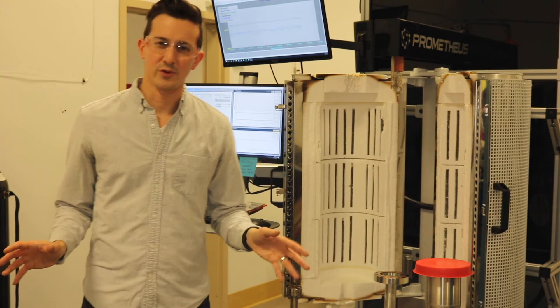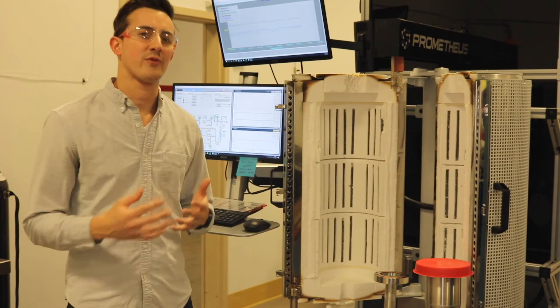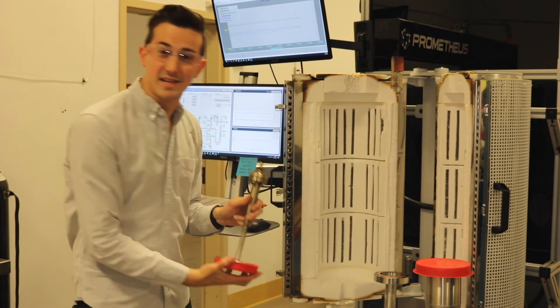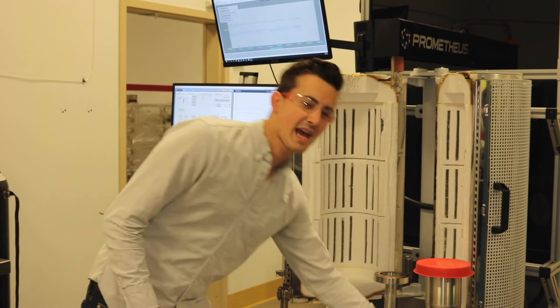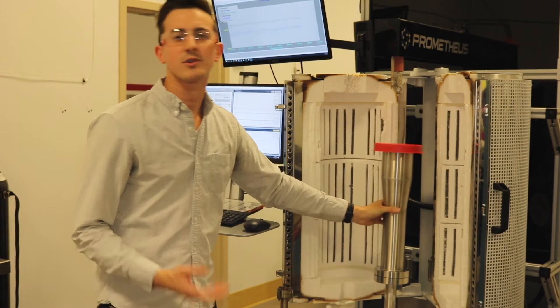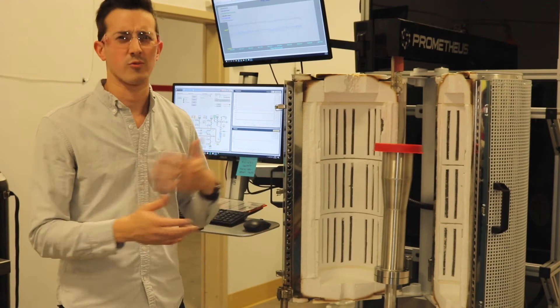For ease of use, one thing the engineering team likes to do is provide common flanging across all reactor sizes. That allows our scientists to take a 10 milliliter reactor, quickly attach it to the system, do an ALD run, then remove it and add something much larger — say a one liter reactor — and quickly attach it to the same system with minimum wrenching or reassembly.